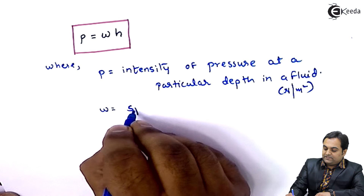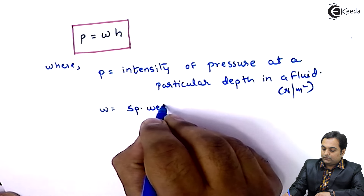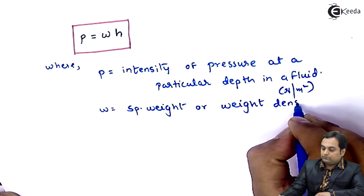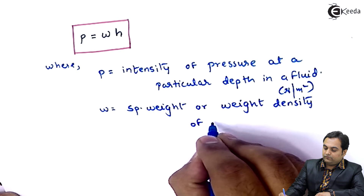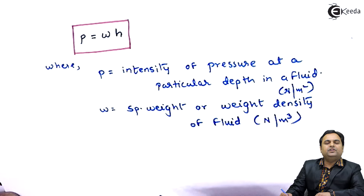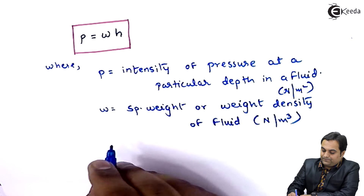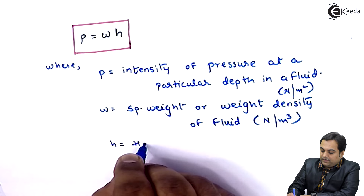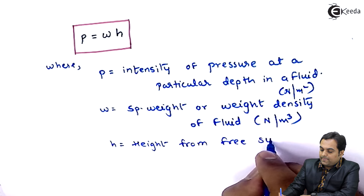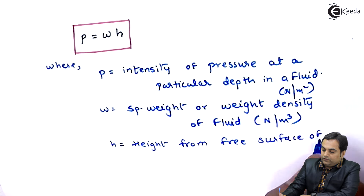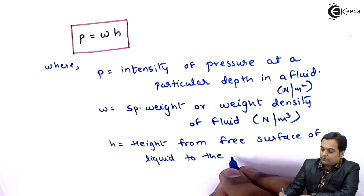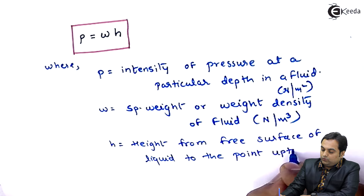Here, w is the specific weight or weight density of the fluid; its unit is Newton per meter cube or kilonewton per meter cube. And h is the height from the free surface of the liquid to the point up to which pressure is to be found out.